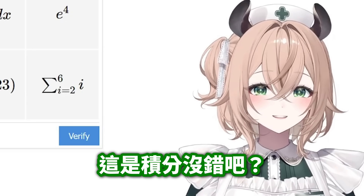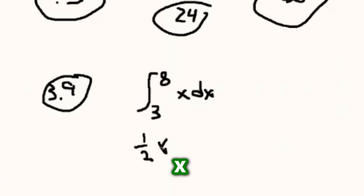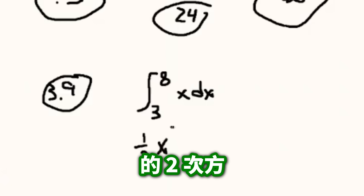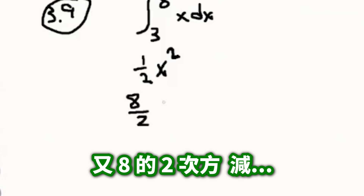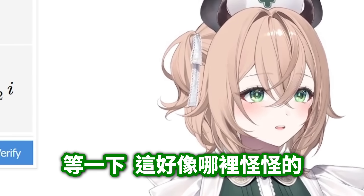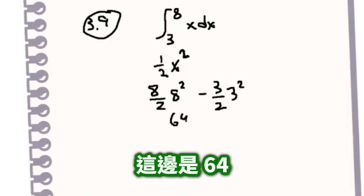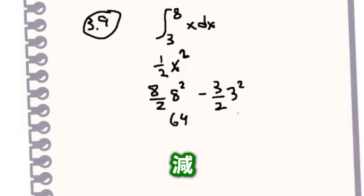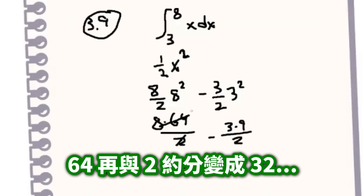I call that 3.9. What is this — the integral of x dx from 3 to 8? Do I remember how to do this? This is an integral, right? I'm gonna call that one half x squared, and then it would be eight over two times eight squared minus... wait, this is gonna be weird.